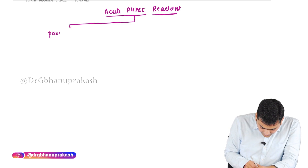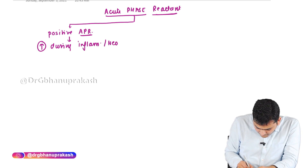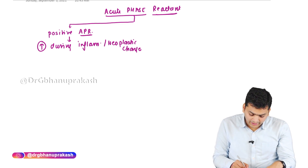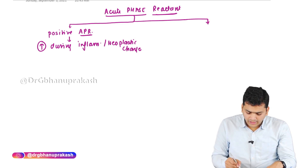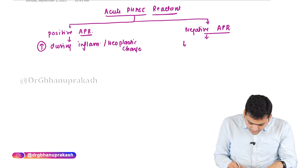Positive acute phase reactants are going to be increased during inflammation or any neoplastic change. There are also certain group of molecules that are going to decrease during that period and they are called as the negative acute phase reactants. So we should know which are the positive ones and the negative ones.